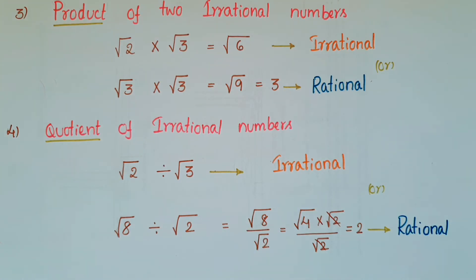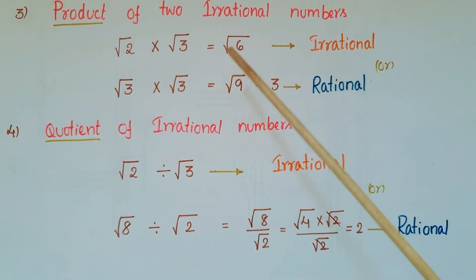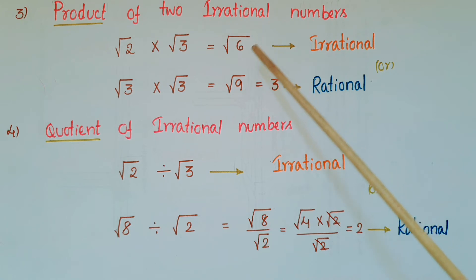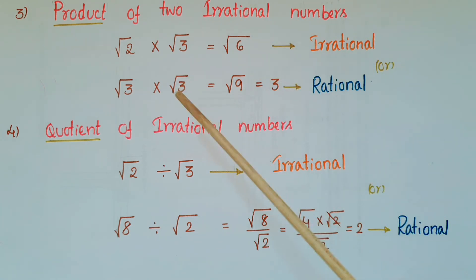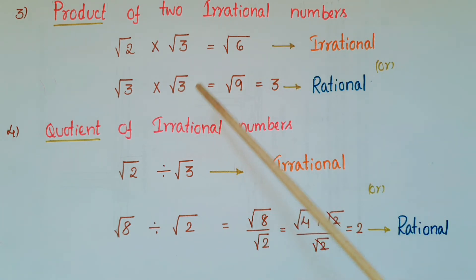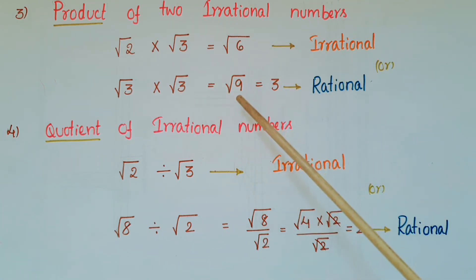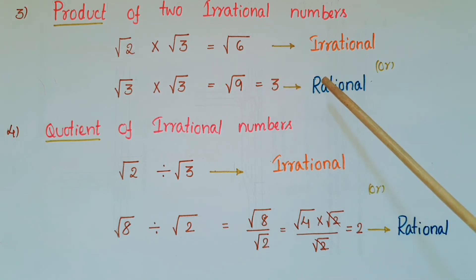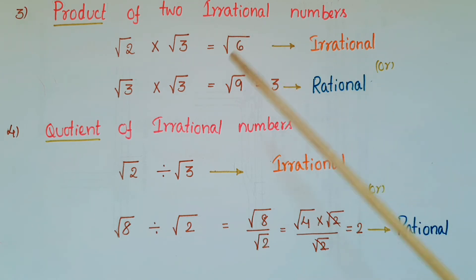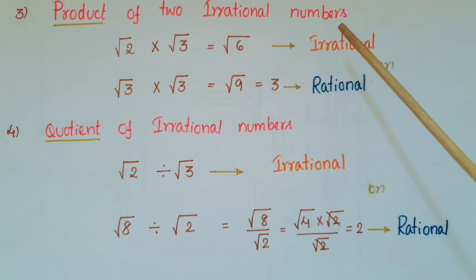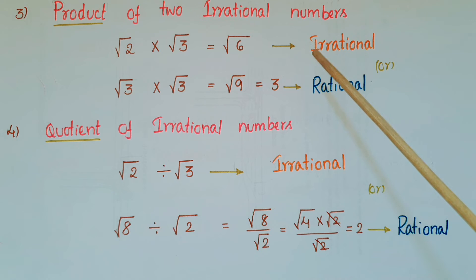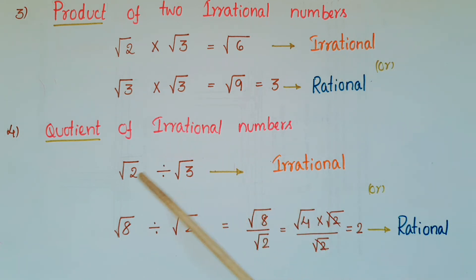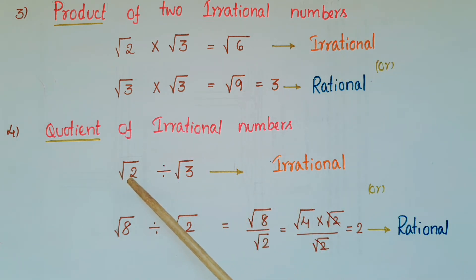Next: the product of two irrational numbers. Root 2 multiplied by root 3 equals root 6, which is an irrational number. But root 3 multiplied by root 3 equals root 9, which equals 3 — a rational number. So the product of two irrational numbers need not be an irrational number.